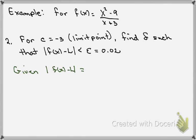We're given the absolute value of f(x) - L. We know that's going to be equal to, once we plug in the f(x), that's (x²-9)/(x+3). And that's minus our limit L, which was -6. That must be less than 0.02 because that's the epsilon they've asked us to use in this problem.